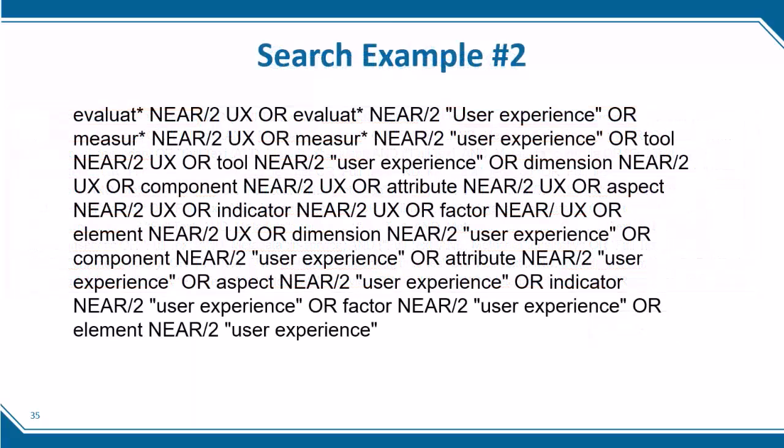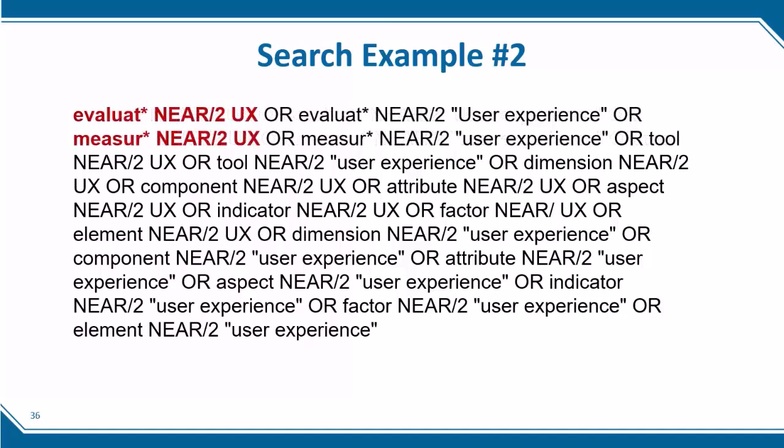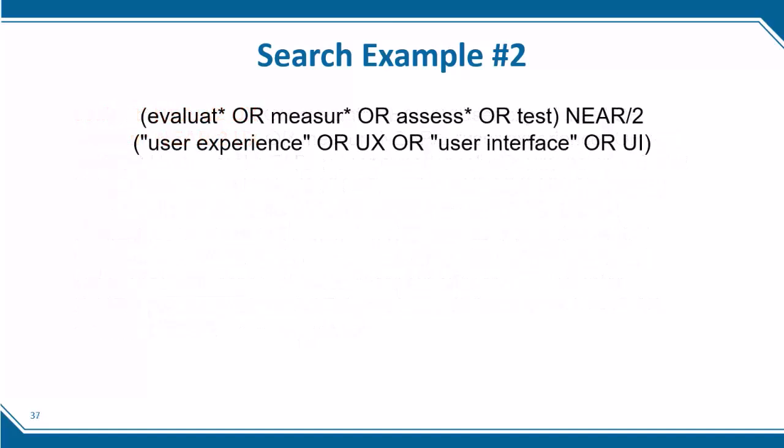Here's another example of a search that didn't work in IEEE Xplore. You'll notice that the search does not have any parentheses around any of the search terms and operators. IEEE Xplore requires nesting in order to know the order in which to process a search request — that is the first issue with this search. In addition, a closer inspection reveals that this search string is repeating a set of synonyms connected by a proximity operator to another set of synonyms. There are just two main topics: "evaluate" and "user experience." This type of search can be simplified by creating a search clause for each topic and its synonyms, and then combining them with the proximity operator.